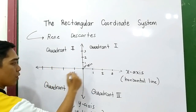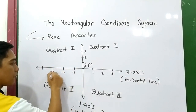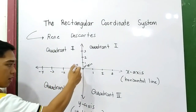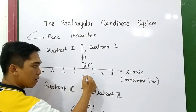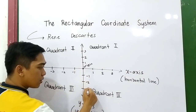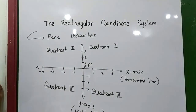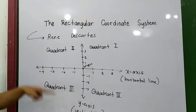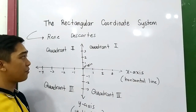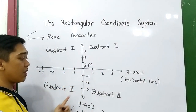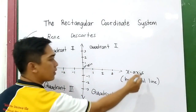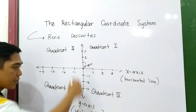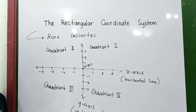Negative one, negative two, negative three, negative four, and so on. This is our rectangular coordinate system. We divide it into four quadrants: one, two, three, four. The X-axis is the horizontal line and the vertical line is the Y-axis.